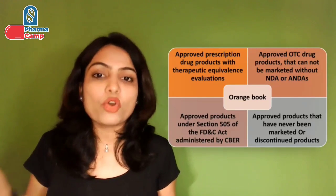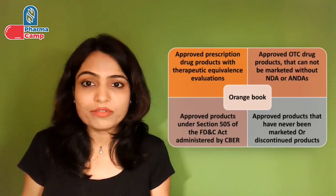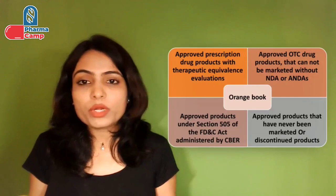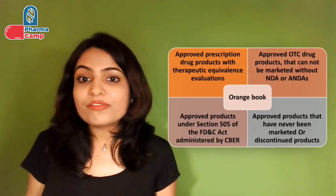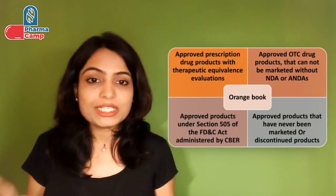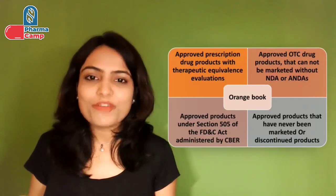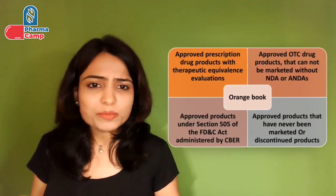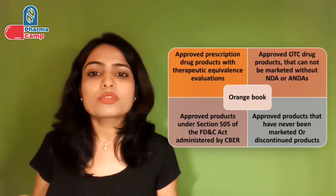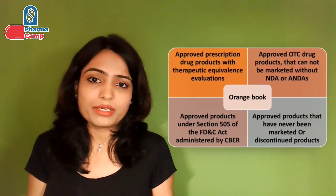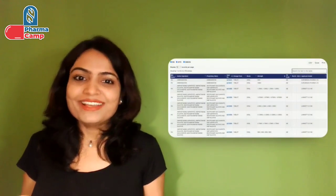The orange book consists of four parts. First, approved prescription drug products with therapeutic equivalence evaluations. Second, approved OTC drug products for medications that have been approved but cannot be marketed without an NDA because they are not covered under existing OTC monographs. Third, drug products with approval under Section 505 of the FD&C Act administered by CBER. Fourth, a cumulative list of approved products that have never been marketed — they may be for exportation, military use, or may have been discontinued.